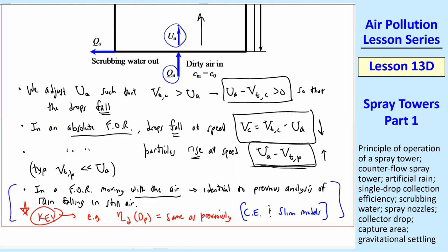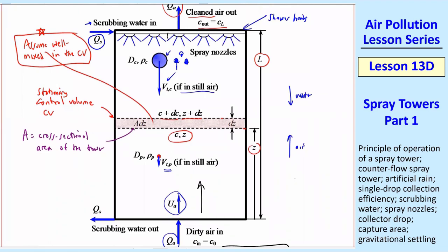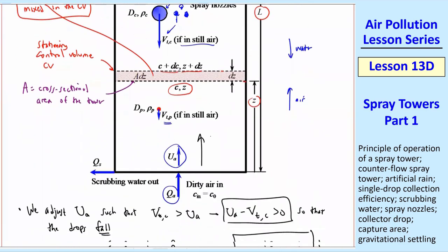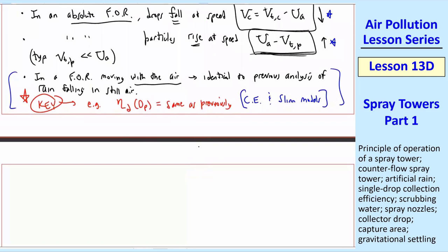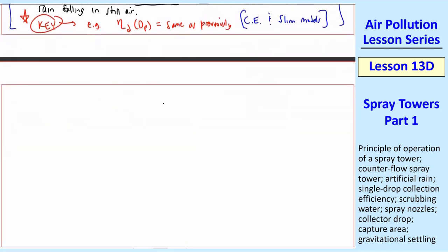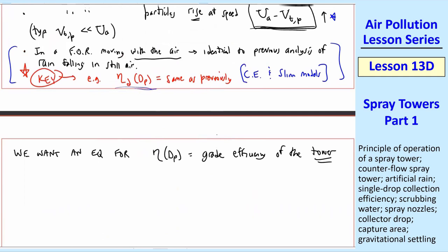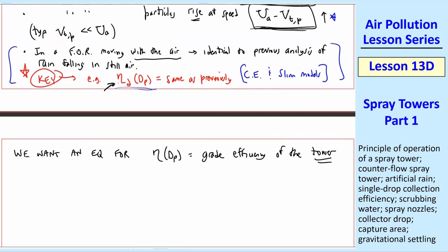So that's the physics of what's going on. But when we analyze this, we're going to use this control volume in a stationary frame of reference or absolute frame of reference. That's why we defined these speeds for the drops and the particles in this absolute frame of reference of our control volume. Our goal is to find a grade efficiency of the entire tower, not just a single drop. Remember, this D means single drop up here. So, in other words, we want an equation for eta DP, the grade efficiency of the tower. Notice there's no subscript D. We're not worried about a single drop. We're worried about the entire thing. But we will use eta D that we had before in our analysis.